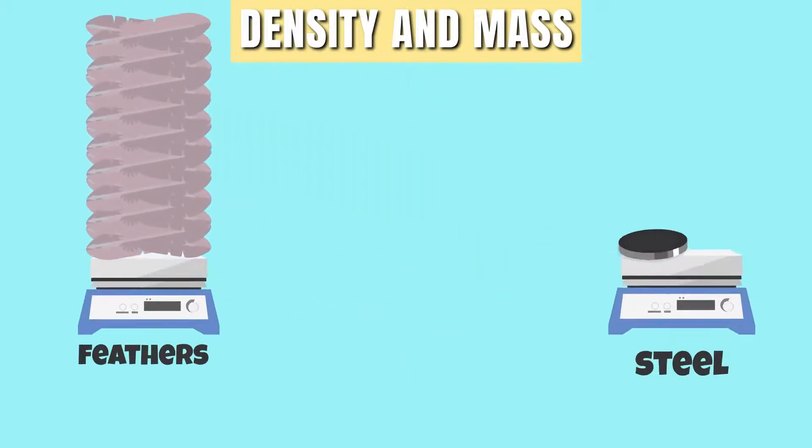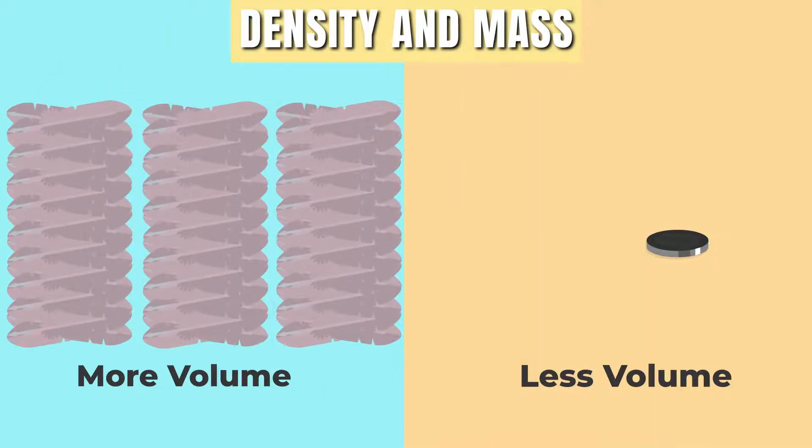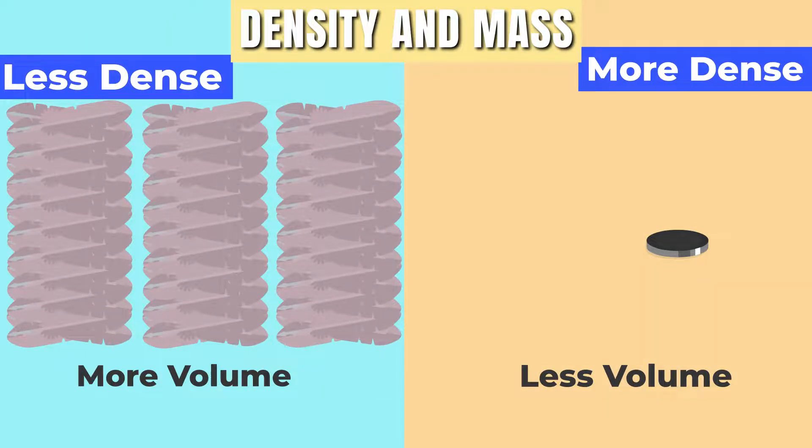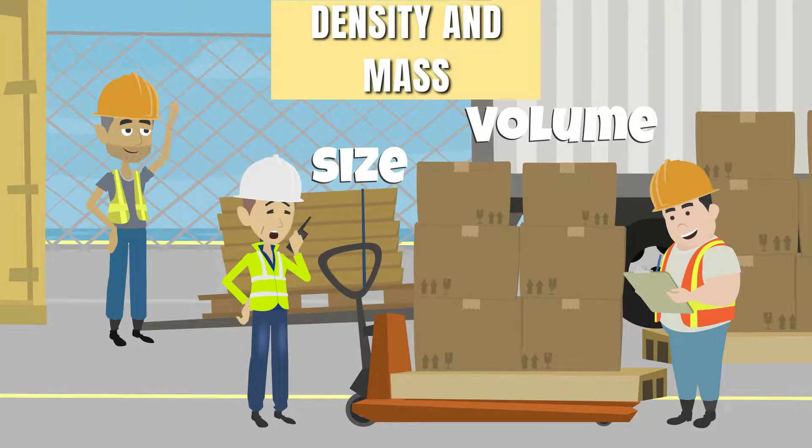Remember to not confuse density and mass. For example, a kilogram of feathers and a kilogram of steel have the same mass, but the feathers have more volume than the block of steel. So a kilogram of steel is denser than a kilogram of feathers. Unlike mass, we need to consider the size or volume for density.